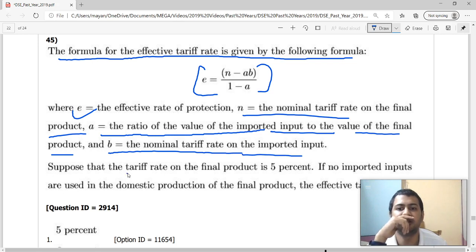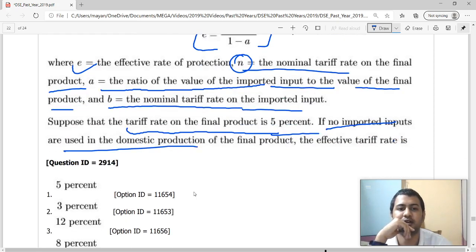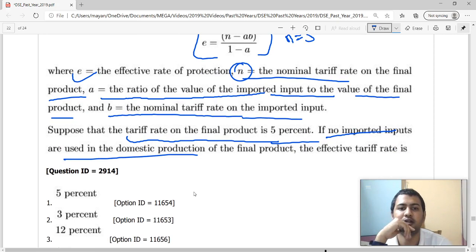Now, suppose that the tariff rate on final product is 5 percent, so tariff rate on final product that is N. You have N equals to 5. If no imported inputs are used in domestic production of the final product,